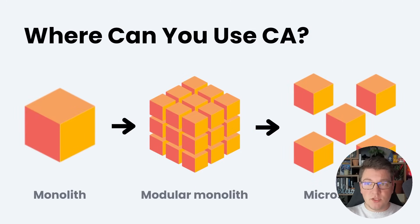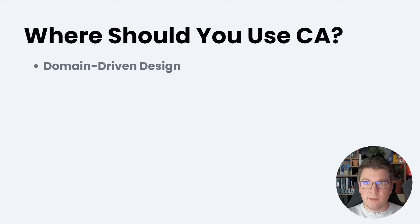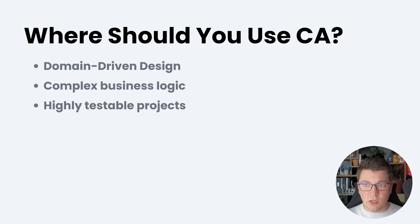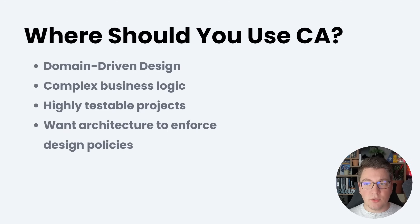The next question is where you should be using clean architecture — and really it makes sense anywhere. It works inside of a monolith, a modular monolith, and also inside of microservices. Clean architecture is a perfect fit if you want to use domain-driven design or solve complex business logic, because it's a domain-centric architecture that structures your business logic into the application core. Another benefit is that it's highly testable. And lastly, if you want your architecture to enforce your design policies, clean architecture is a good fit because it's an opinionated approach to how you should structure your system.